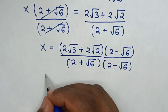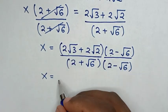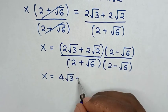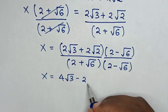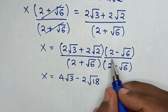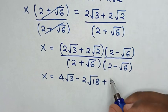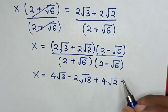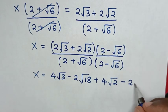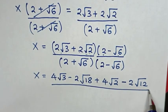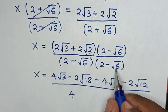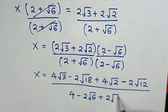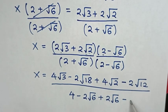Then in the next step, x will be equal to: this times this is 4 square root of 3. Then this times this — positive and negative — will be negative 2, and square root of 3 times square root of 6 is square root of 18. Then this times this will be negative 2, and square root of 2 times square root of 6 is square root of 12. Then in the denominator: negative 2 square root of 6 and positive 2 square root of 6 cancel, and square root of 6 times negative square root of 6 is negative 6, giving 4 minus 6.